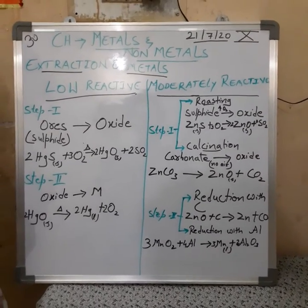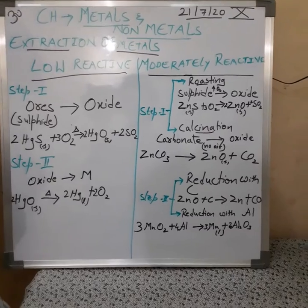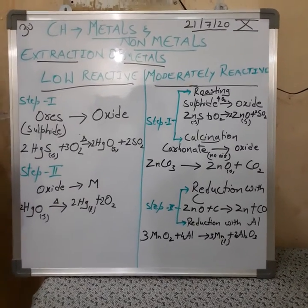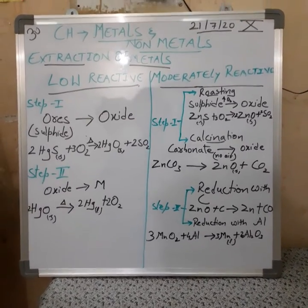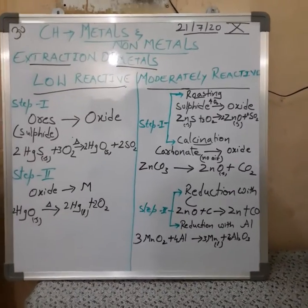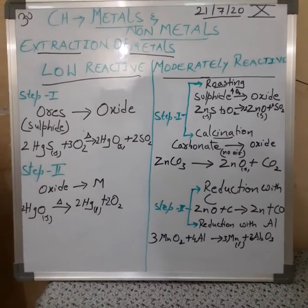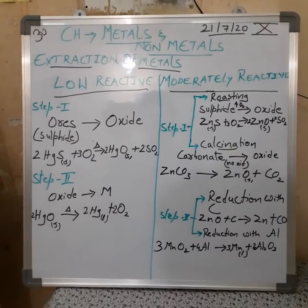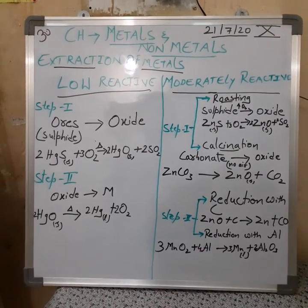The higher order refers to the highly reactive metals, the middle order to the moderately reactive metals, and the lower order to the least reactive metals. We know the list of metals in the order of the reactivity series.